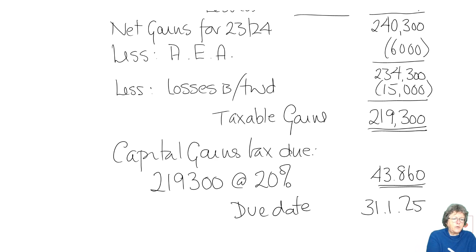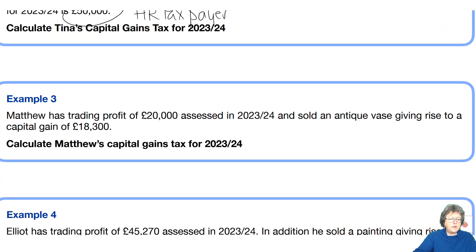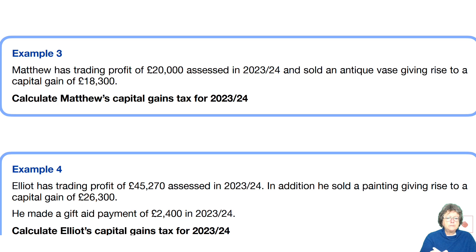So that's example number two. Let's have a look at example number three. So here Matthew has trade profits of £20,000 which means we are going to have to deal with the income tax position and he sold a vase and it gave rise to a gain of £18,300. What's his capital gains tax for that year? Now this is more like a multiple choice question. You're going to have to do two things. You're going to have to work out how much basic rate band he's got left to work out the tax liability and then work out the tax on the £18,300.